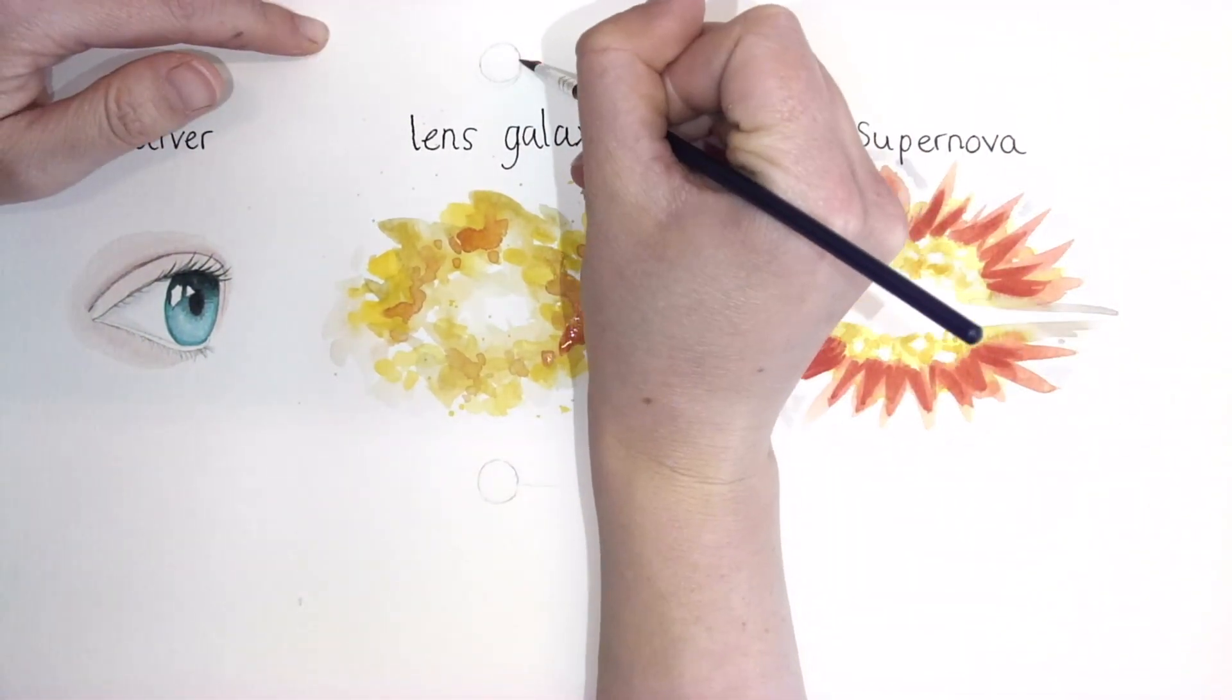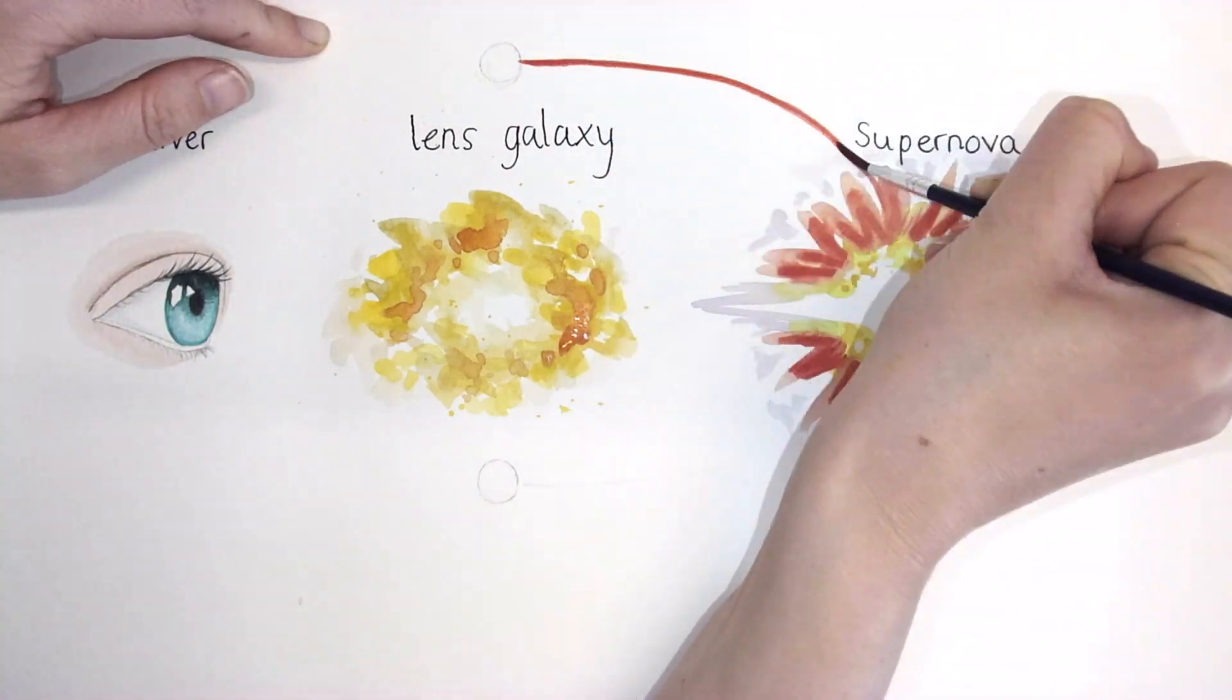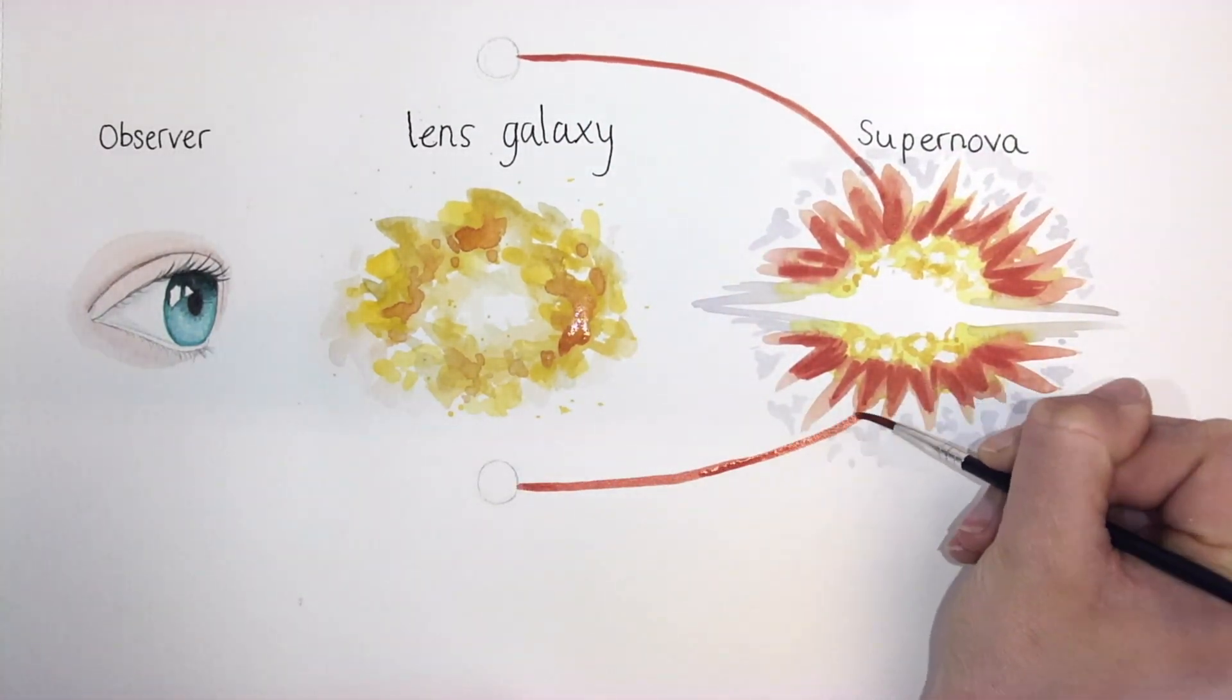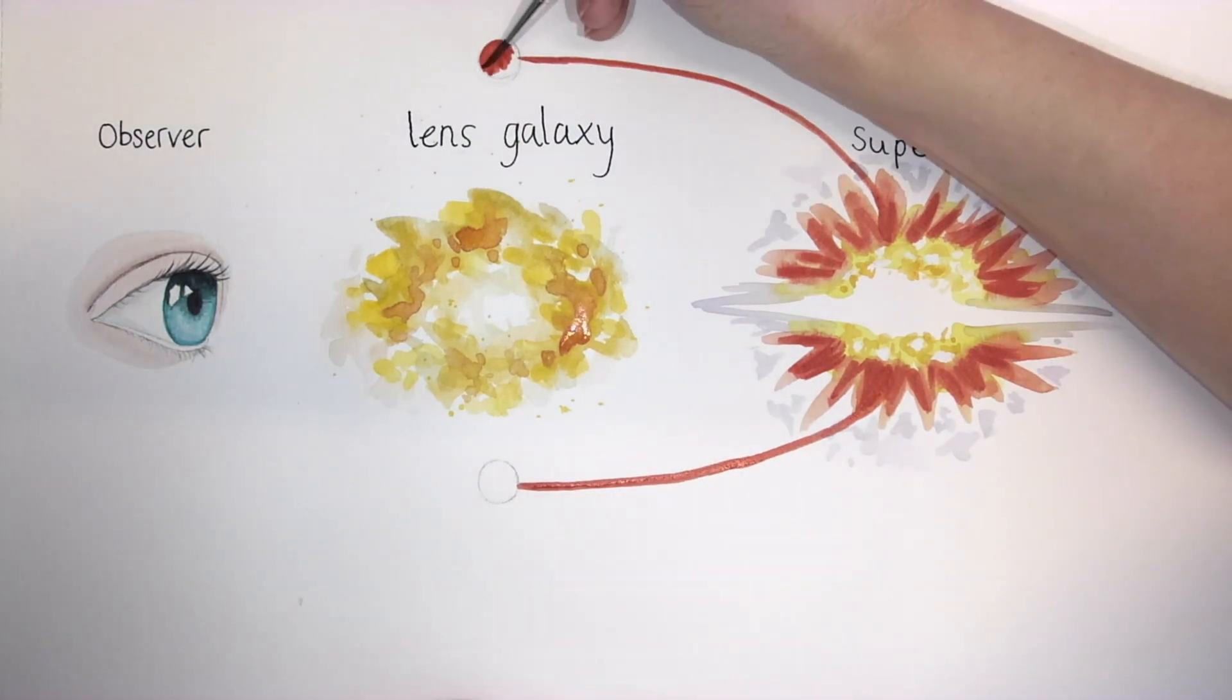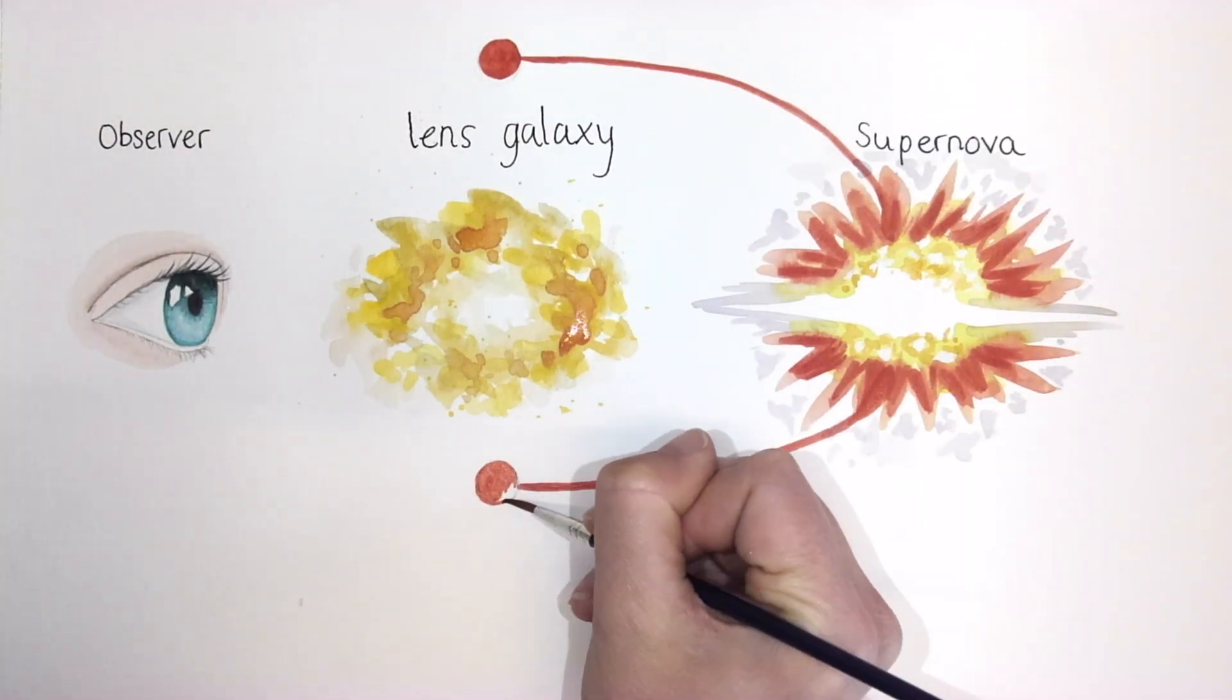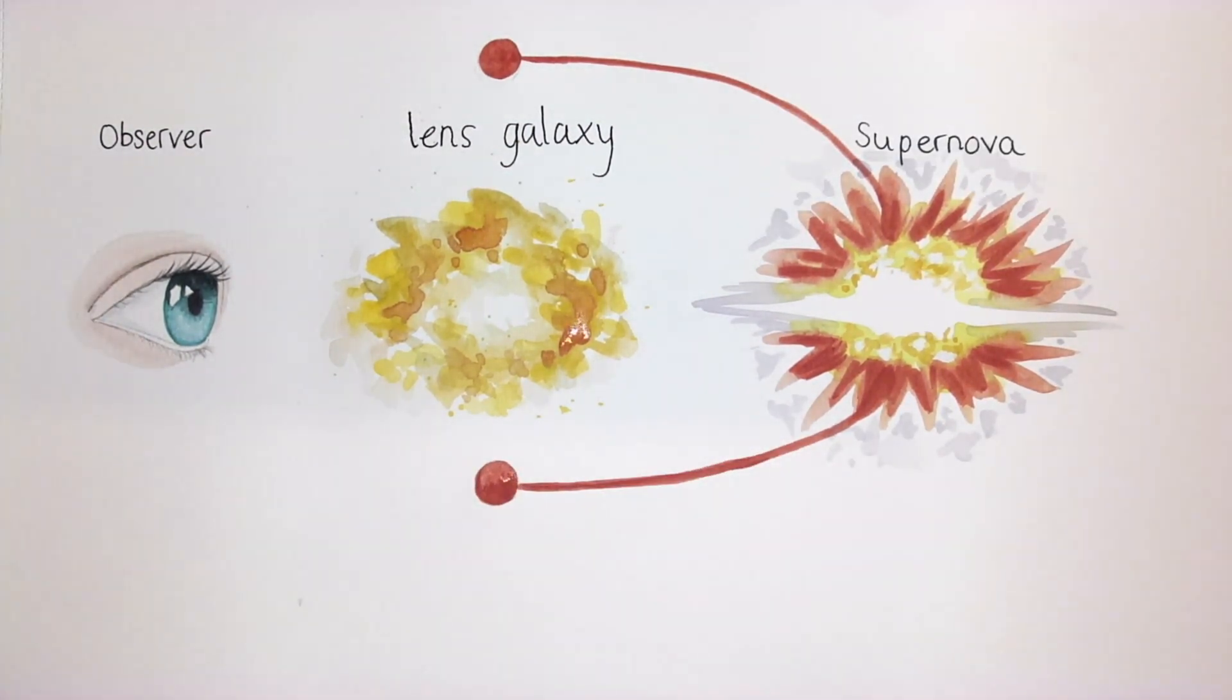Massive galaxies are able to bend and magnify light rays from the supernova, causing the light to travel in multiple paths around the lens galaxy. As a result, we can see multiple images of the same event.